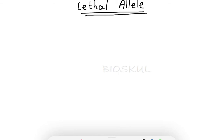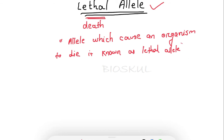Welcome back to Bio School. In today's session we are going to learn in detail about lethal alleles. Lethal means something that can cause death. A lethal allele means if an individual has a lethal allele, then that allele can cause the death of that individual. An allele which can cause an organism to die is known as a lethal allele.